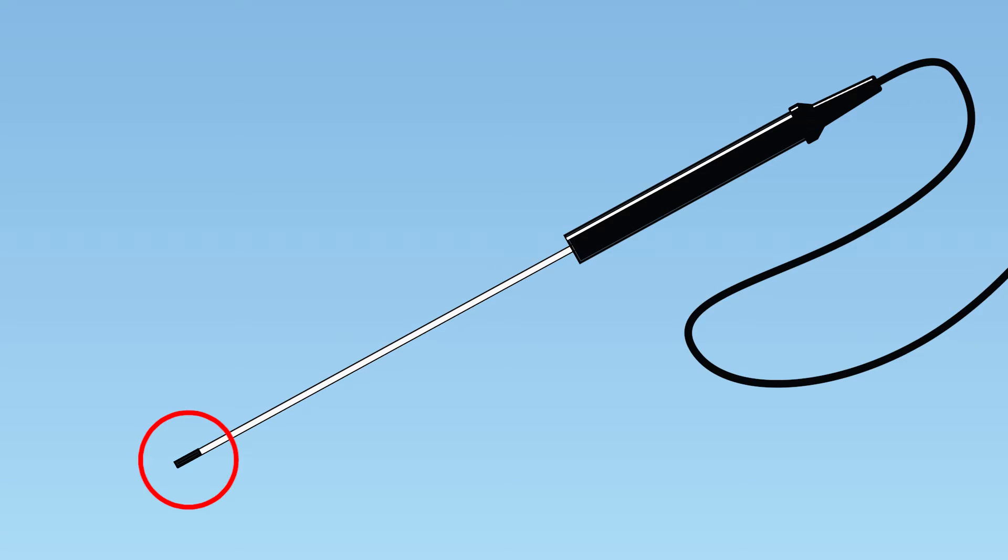The tip of the sensor contains both the oxygen sensing element and a separate reference electrode. These are enclosed by a two millimeter sleeve filled with electrolyte. A gas permeable polymer membrane on the end of the sleeve allows oxygen to pass through while blocking liquids, ions, and particulate matter.